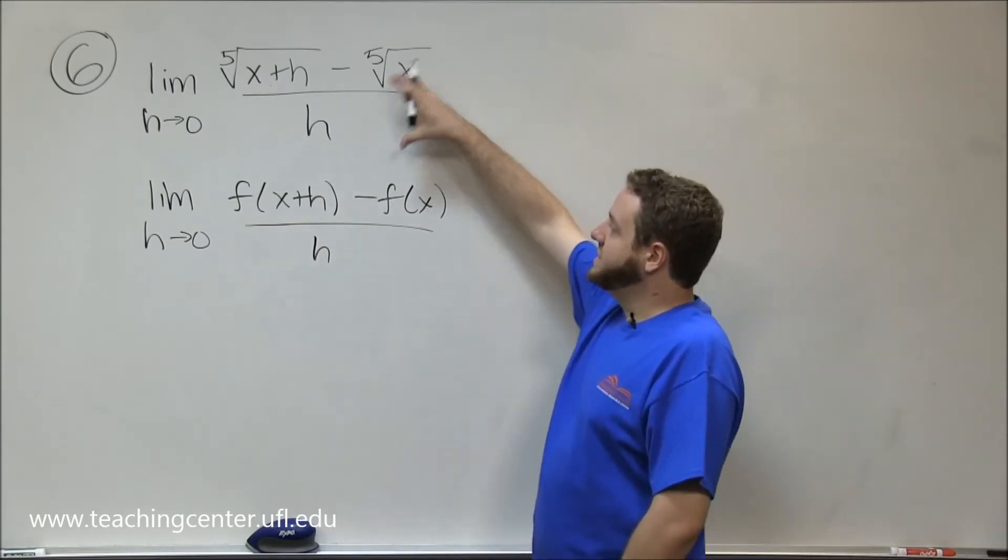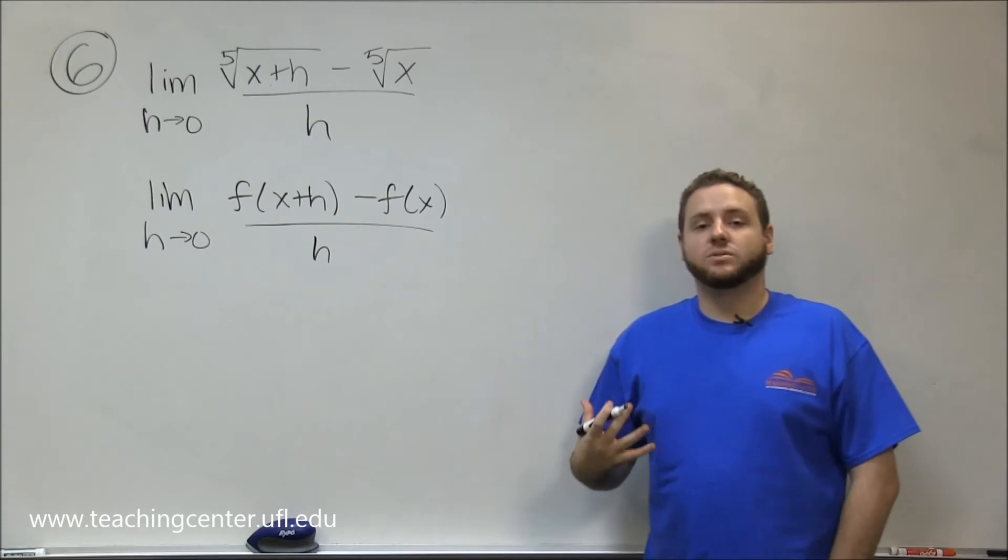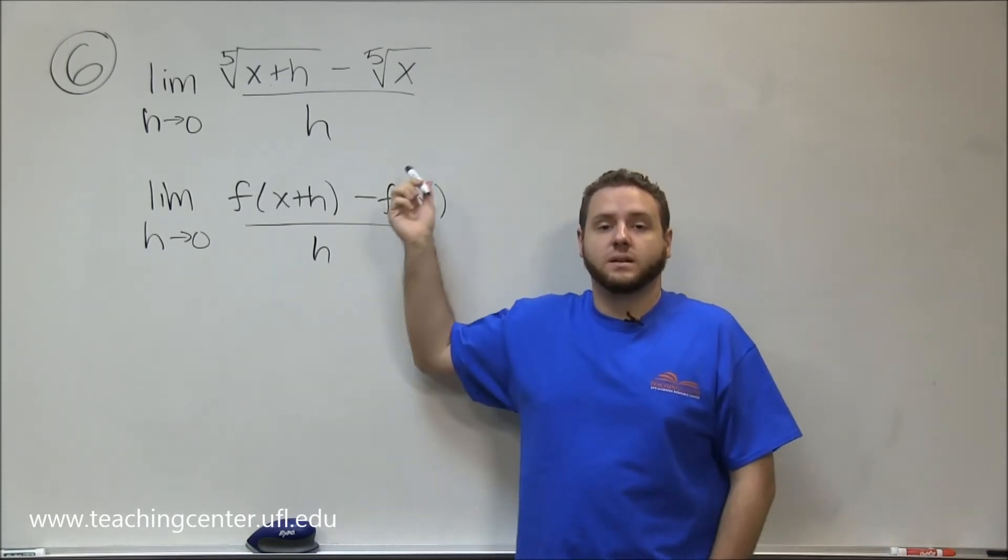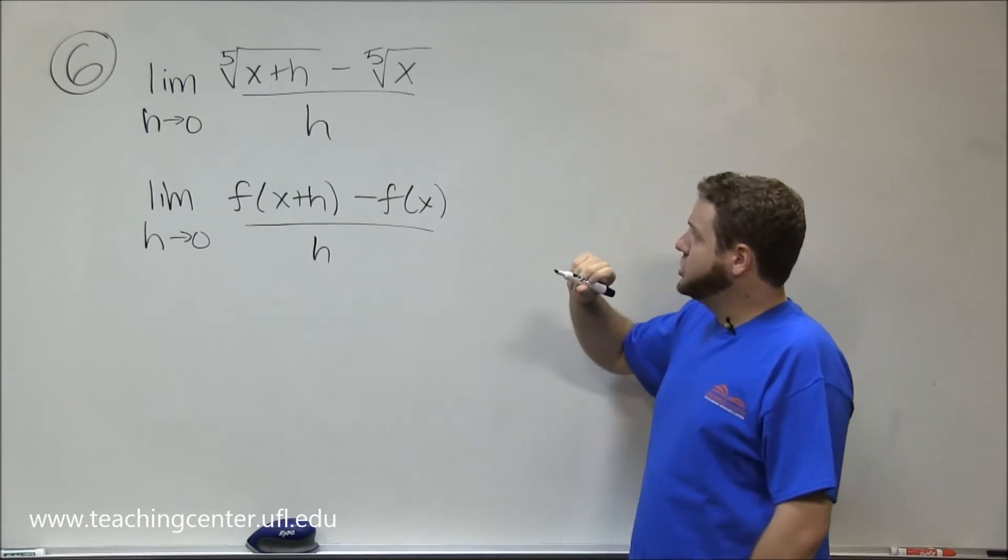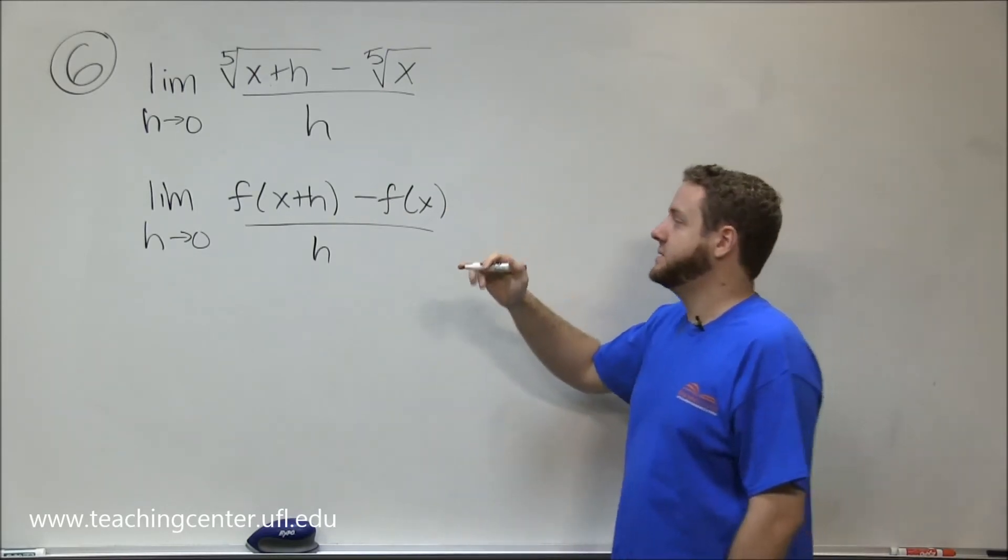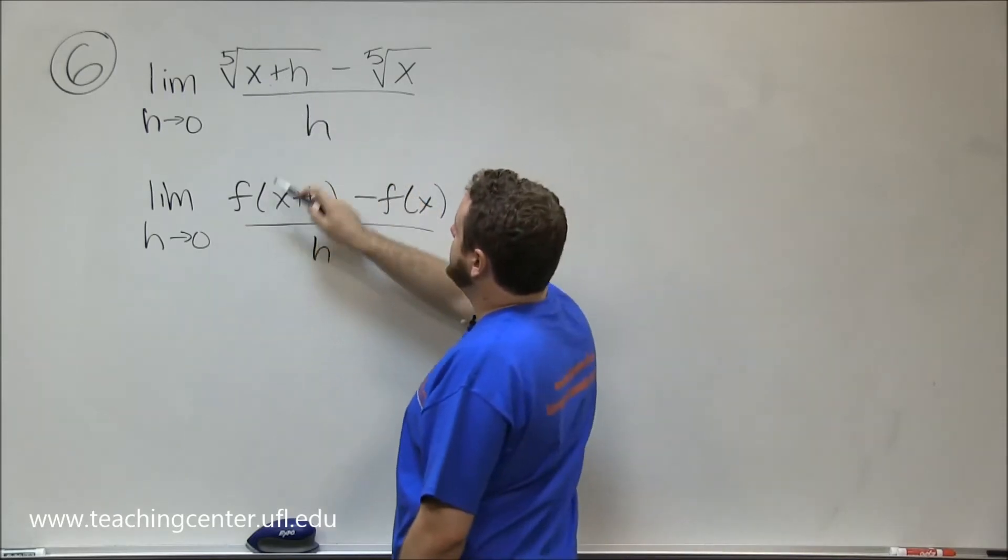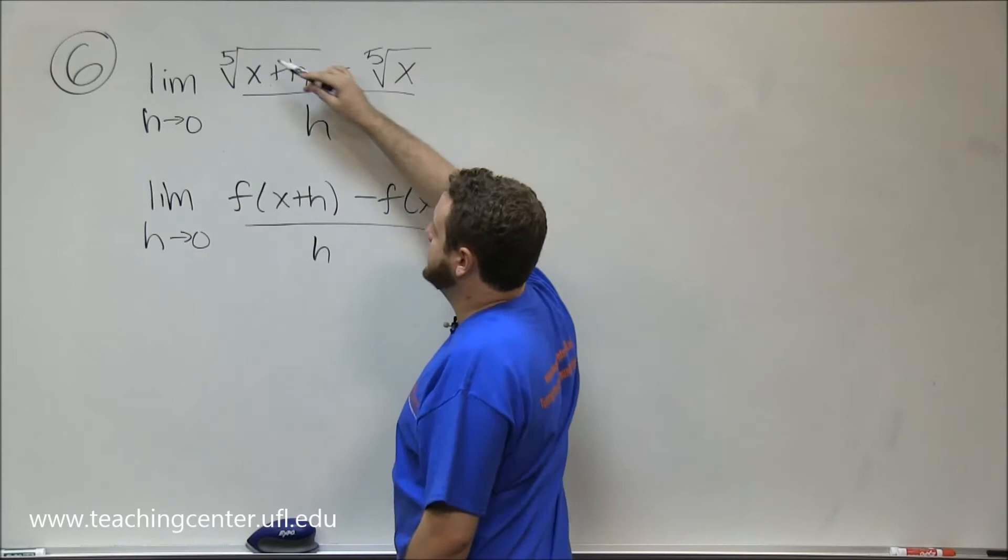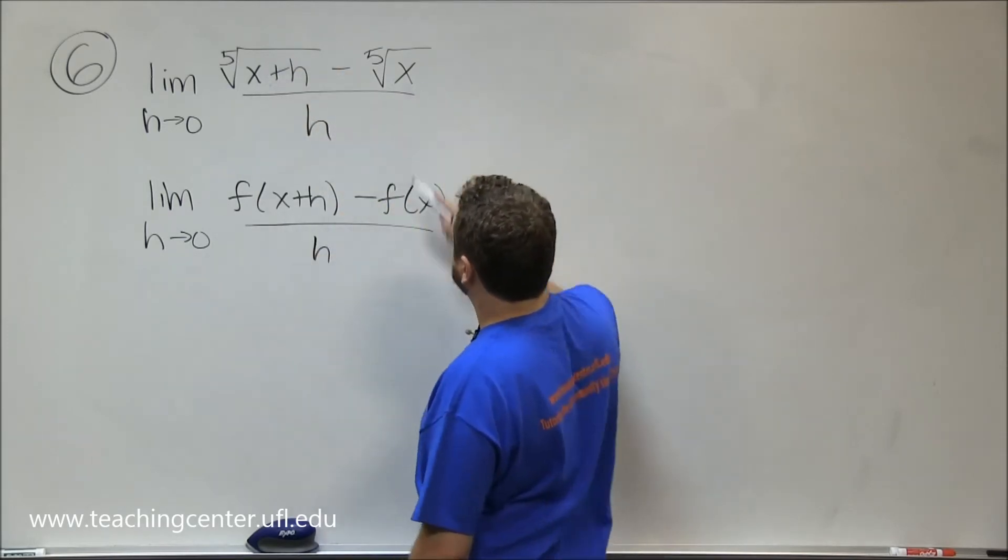So what this limit is asking us to do is actually just to take the derivative of a function. We just need to figure out which function it is given this format. It should be pretty clear from writing these two on top of each other like this that the function being applied in our problem is the fifth root of x. Because here we're doing the fifth root of x plus h, here we're doing the fifth root of x.